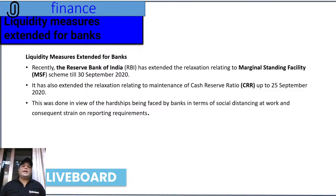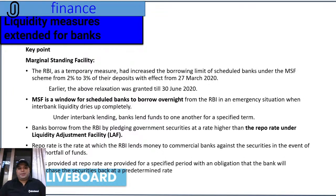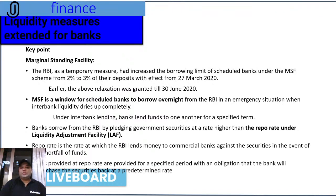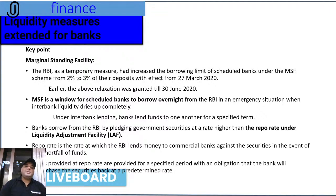Given the exceptional hardships and cash crunch of 2020, as a temporary measure the RBI increased the borrowing limit of scheduled banks under the MSF scheme from 2% to 3% of their deposits with effect from 27th March 2020. The MSF is a window for scheduled banks to borrow overnight from the RBI in an emergency situation where interbank liquidity dries up completely — when banks don't have enough funds to carry out daily operations. Under MSF, banks borrow overnight from the RBI using interbank lending rates.